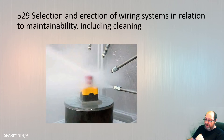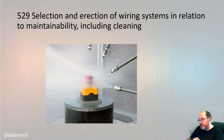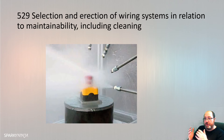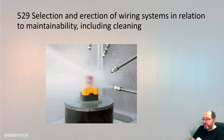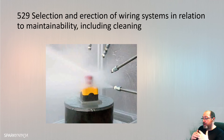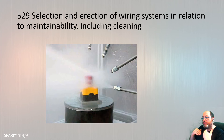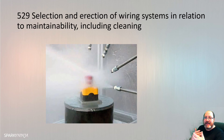To finish off chapter 52, we have selection and erection of wiring systems in relation to maintainability, including cleaning. With regards to maintainability, reference is made to 132.12 from Part 1: where it's necessary to move any protective measure in order to carry out maintenance, provision shall be made so the protective measure can be reinstated without reduction of the degree of protection originally intended. Take for example a barrier or enclosure — if maintaining or cleaning equipment requires removing a lid or box, it shouldn't be damaged or weakened, and when reinstated it will be in no lesser a state.